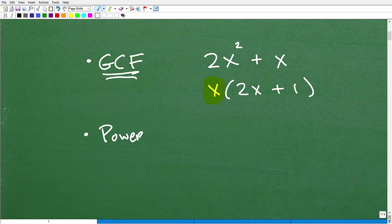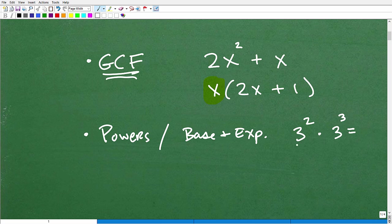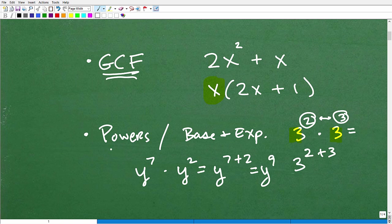And then you need to know something about powers in terms of the parts of powers and properties of powers. So powers involve a base and an exponent. For example, let's say I have 3 squared times 3 cubed. If the bases are the same, what do we do with the exponents? If this is multiplication of powers and the bases are the same, we're going to add the exponents. That's 2 plus 3.